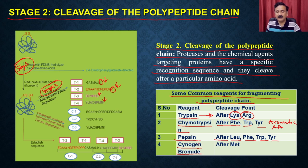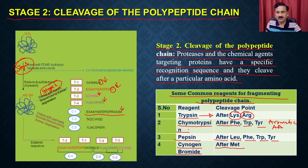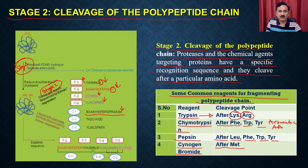You can also use different chemical reagents. For example, cyanogen bromide cleaves the polypeptide after methionine — the methionine is cut by the cyanogen bromide. Once you have these small fragments, you can take the individual fragments and sequence them. Once you have the sequence of these small fragments, you put them together and get the sequence of the complete protein.